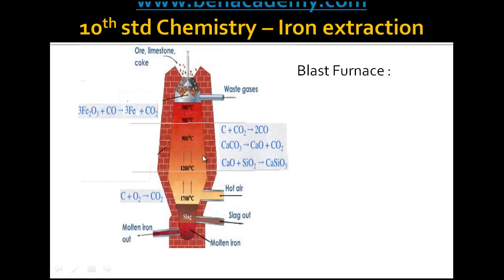The furnace used in the industry is called a blast furnace. This is a very tall tower lined inside with fire bricks. This tall blast furnace is divided into three zones: the lower zone, the middle zone, and the upper zone. Now let us see what happens in this furnace when the raw materials are fed into it.